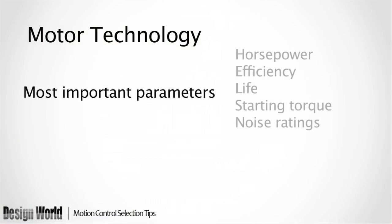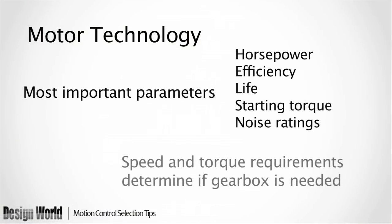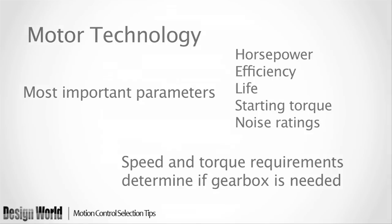Next, consider what type of motor technology best suits the intended application. Because each application has its own unique characteristics, it's important to determine which of the parameters — for instance, horsepower, efficiency, useful life, starting torque, or noise rating — are most important to that specific application.